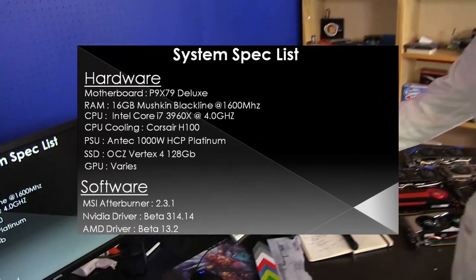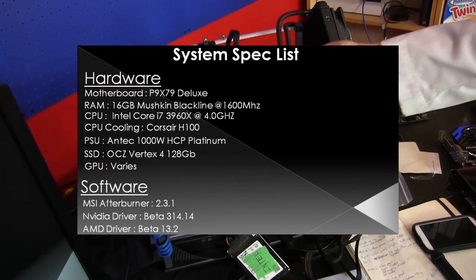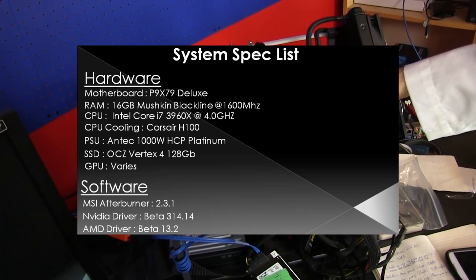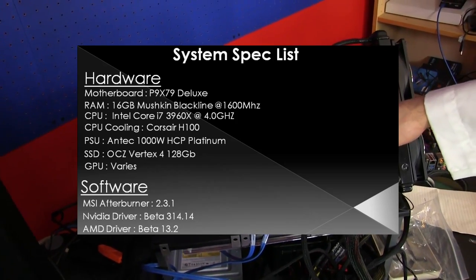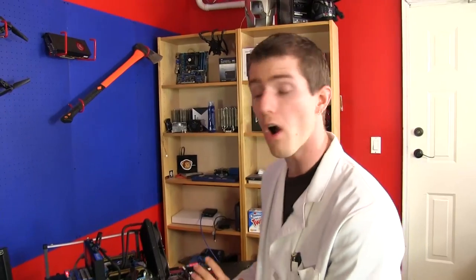Our test bench is a P9X79 Deluxe with 16 gigs of Mushkin BlackLine memory, a 3960X at 4 GHz, so that's a 6-core Intel processor. We're using an N-Tech 1000W power supply, a 128GB SSD. For our software, we are using Afterburner 2.3.1 to run all of our overclock settings. We overclock every card to within a reasonable level, not absolute max, because this should be something you can obtain just by checking out our spreadsheet, which is linked under the video, and dialing those settings into your GPU. They're pretty much safe settings. We're using Beta 314.14 for NVIDIA and Beta 13.2 for AMD.